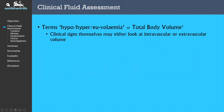Terminology is very important when either describing or documenting the fluid assessment. The terms hypo, hyper and euvolemia generally refer to total body volume. As we know from the previous video, this is made up of the intravascular and extravascular compartments. The clinical signs themselves may either look at the intravascular or extravascular volume. When we go through the fluid assessment later on in the video, have a think about whether the signs I mention look at intravascular or extravascular spaces.